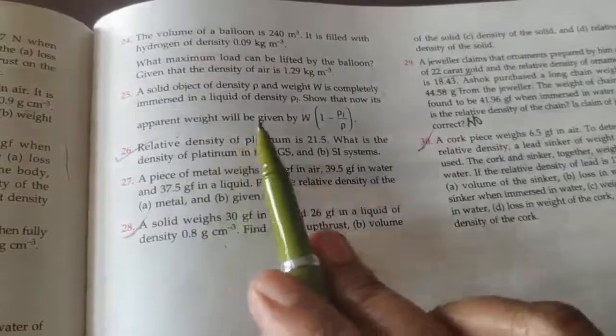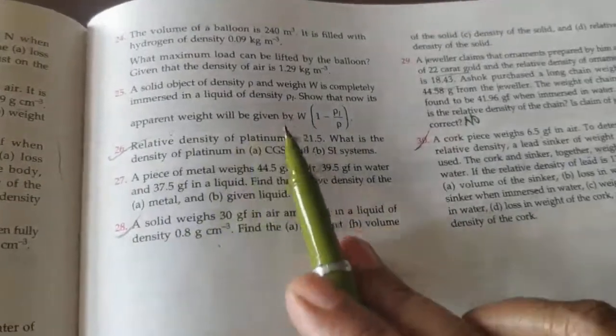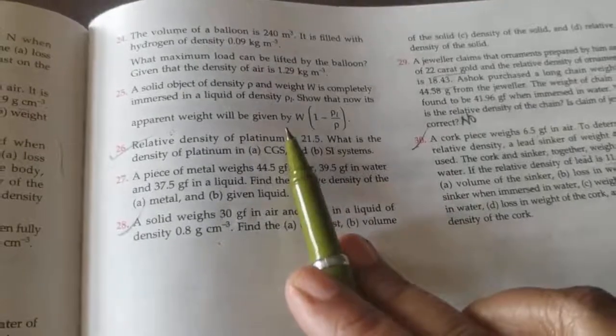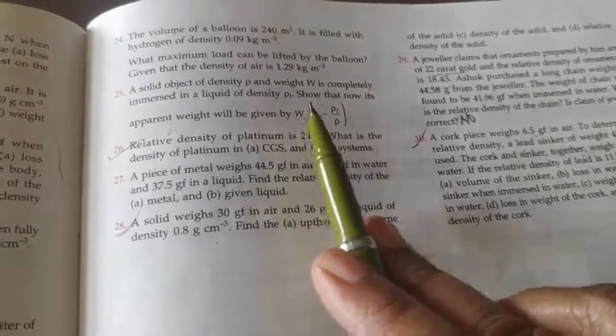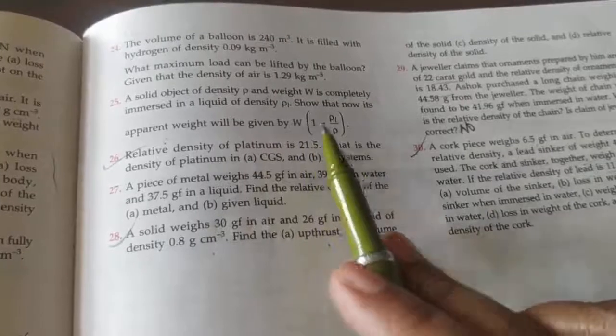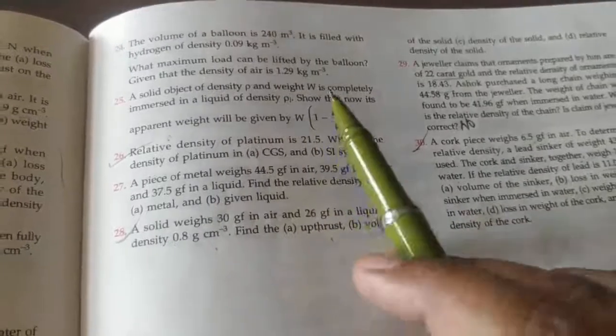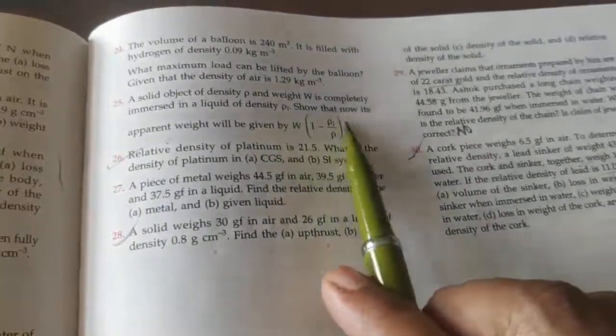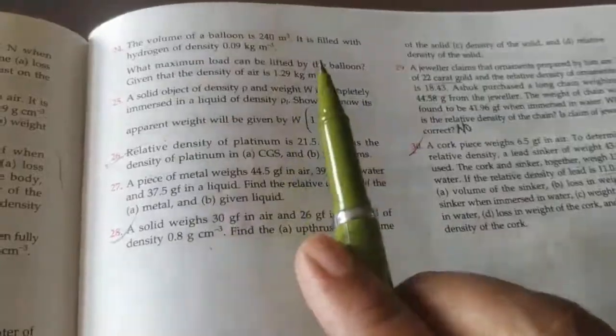that now its apparent weight will be, its apparent weight, you have to find out its expression, that is by capital W under bracket 1 minus rho l upon rho. You have to show this expression, you have to prove this.